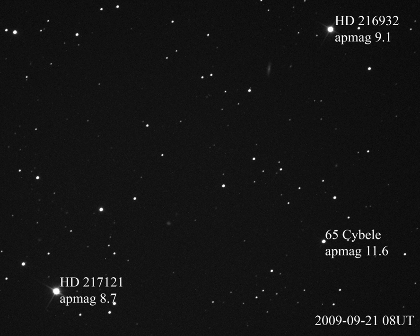The zero point of Pogson's scale was originally defined by assigning Polaris a magnitude of exactly 2. Astronomers later discovered that Polaris is slightly variable, so they switched to Vega as the standard reference star, assigning the brightness of Vega as the definition of zero magnitude at any specified wavelength. Apart from small corrections, the brightness of Vega still serves as the definition of zero magnitude for visible and near-infrared wavelengths, where its spectral energy distribution closely approximates that of a black body for a temperature of 11,000 K.